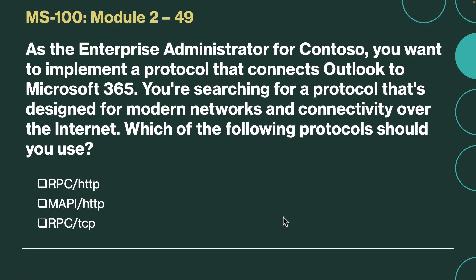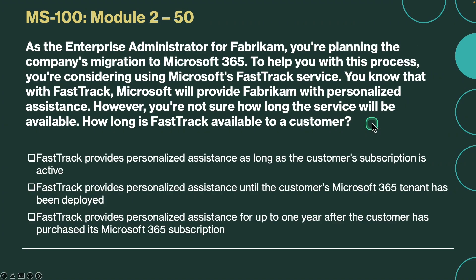Next question. As the enterprise administrator for Contoso, you want to implement a protocol that connects Outlook to Microsoft 365, and you are searching for a protocol that's designed for modern networks and connectivity over the internet. Which of the following protocols should you use? The correct answer is MAPI over HTTP. MAPI over HTTP is the newest and most modern protocol. It's better designed for modern networks and connectivity over the internet than RPC over HTTP or RPC over TCP.